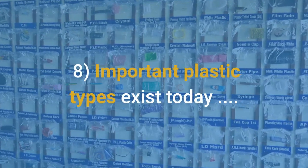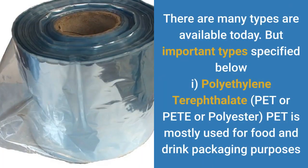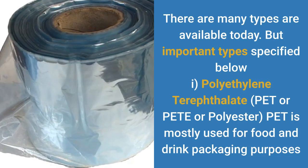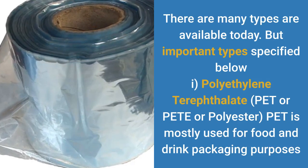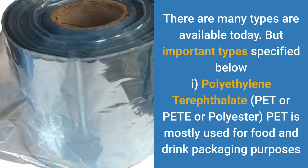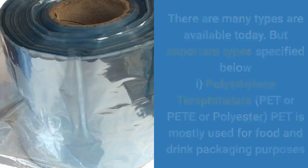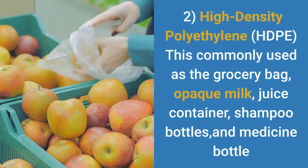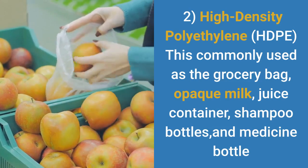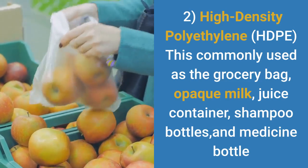Important plastic types that exist today. There are many types available today, but the important types are: 1. Polyethylene terephthalate (PET or PETE, or polyester) — PET is mostly used for food and drink packaging. 2. High density polyethylene (HDPE) — commonly used as the grocery bag, opaque milk and juice containers, shampoo bottles, and medicine bottles.